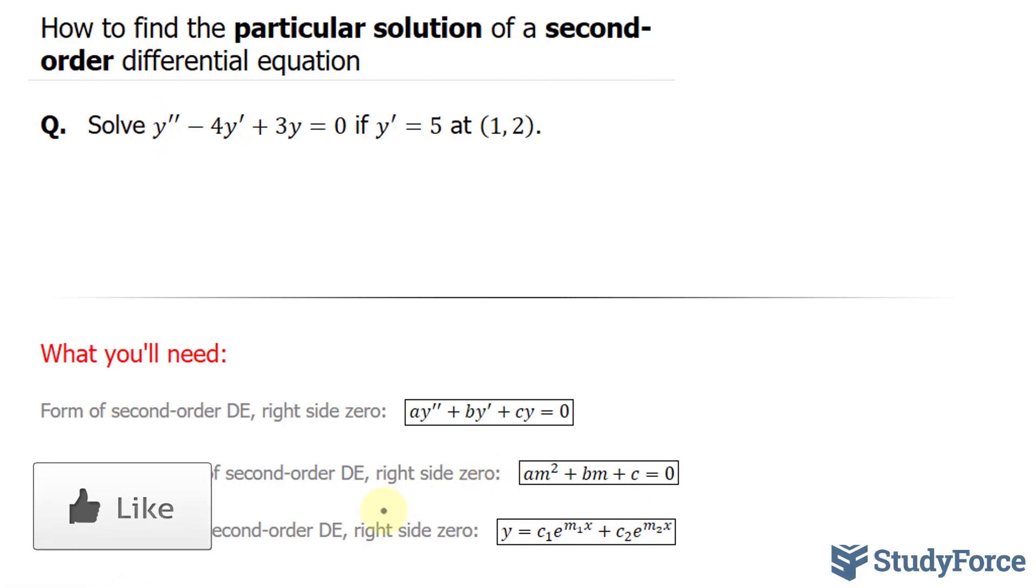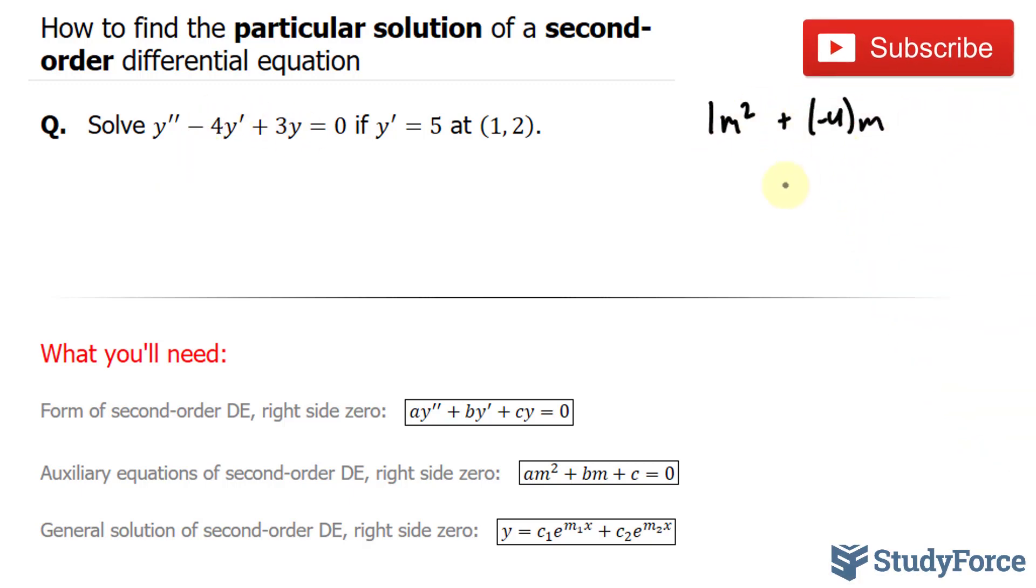So let's rewrite this so that it fits the auxiliary equation. We have am squared. In our case, we don't have a coefficient in front of y double prime, so that will be 1m squared plus, the coefficient here is negative 4, negative 4m. And the coefficient for y is 3, plus 3 is equal to 0. Rewriting this, we have m squared minus 4m plus 3 is equal to 0.